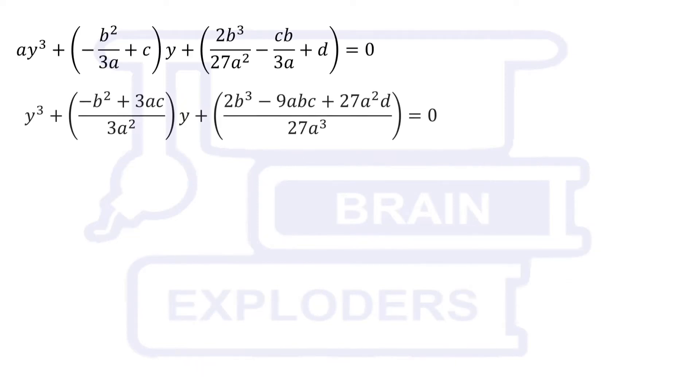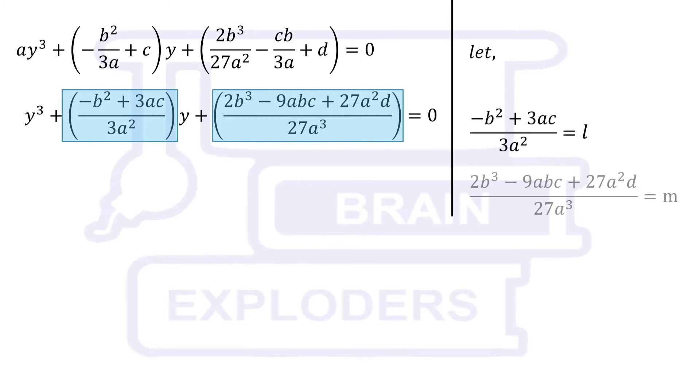Divide whole equation by a. We have a benefit that this equation doesn't have any second degree term. After this, there is not a big role of constants a, b, c and d. So let us replace these by another constants l and m. Later, we will substitute the values of l and m again into our result.